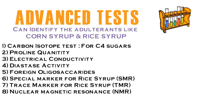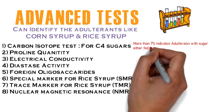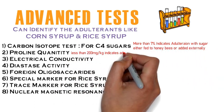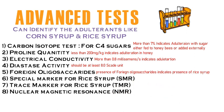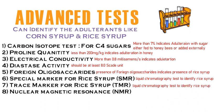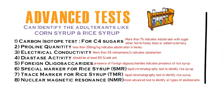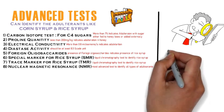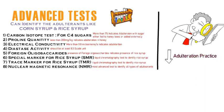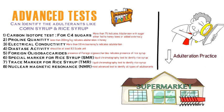Here is the list of advanced tests which can identify corn syrup and rice syrup: Carbon Isotope Test for C4 sugars, Proline Quantity, Electrical Conductivity, Diastase Activity, Foreign Oligosaccharides, Special Marker for Rice Syrup (SMR), Trace Marker for Rice Syrup (TMR), and Nuclear Magnetic Resonance Test (NMR). By using these sophisticated laboratory tests, we can identify all types of adulterants. Proper implementation of these parameters is expected to decrease adulteration at least in the organized sector and in big brands, and may result in a marked decrease in the quantity of honey sold on supermarket shelves.